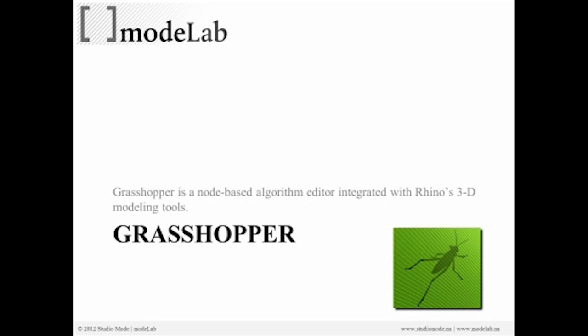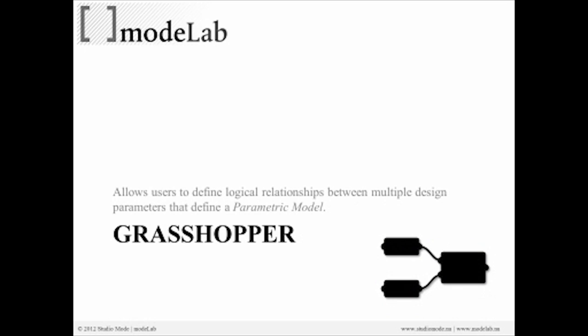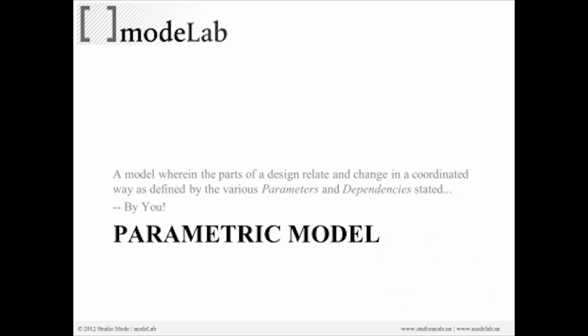Before we get into data trees, let's take a step back and look at what Grasshopper is. It's a node-based algorithm editor integrated with Rhino's 3D modeling tools, and it allows users to define logical relationships between design parameters that define a parametric model. A parametric model is one wherein the parts of the design relate and change in a coordinated way as defined by the various parameters and dependencies stated — and the definition of those parameters and dependencies is done by you.